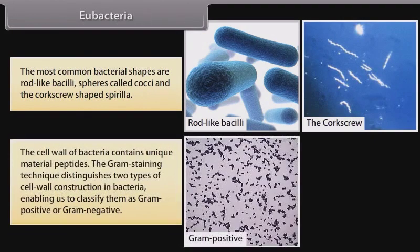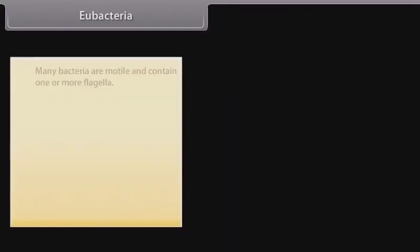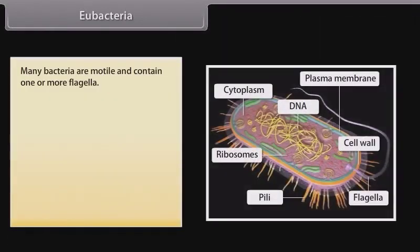The most common bacterial shapes are rod-like bacilli, spheres called cocci, and the corkscrew-shaped spirilla. The cell wall of bacteria contains a unique material called peptidoglycan. The gram-staining technique distinguishes two types of cell wall construction in bacteria, enabling us to classify them as gram-positive or gram-negative. Many bacteria are motile and contain one or more flagella.